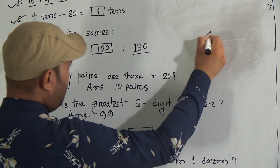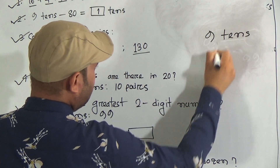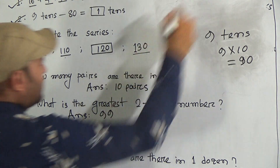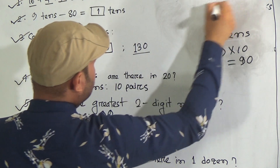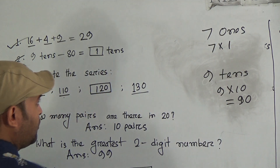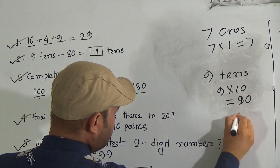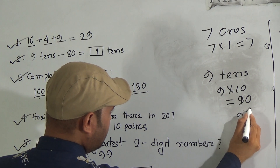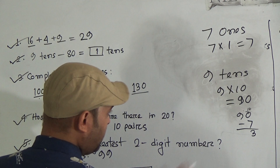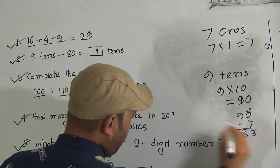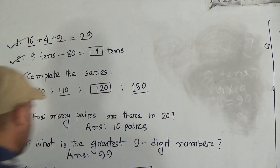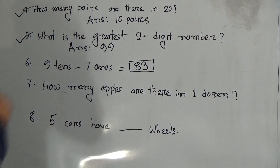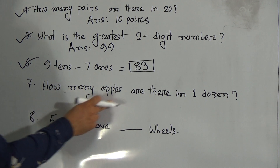Question number 6: 9 tens minus 7 ones. This is similar to question number 2. 9 tens means 9 multiply by 10, so 9 tens are 90. And 7 ones means 7 multiply by 1, so 7 ones are 7. Now 90 minus 7: 7 from 0 — borrow, 7 from 10 is 3, carry 1; 1 from 9 is 8. So 9 tens minus 7 ones equals 83.